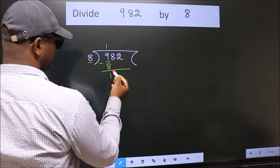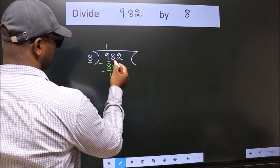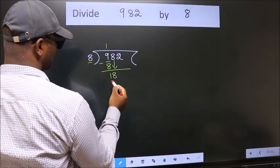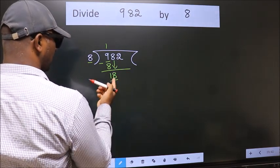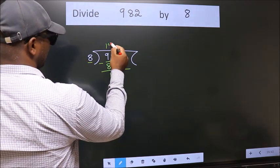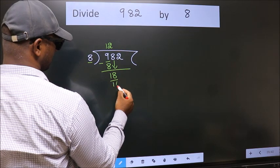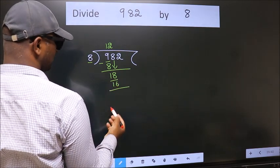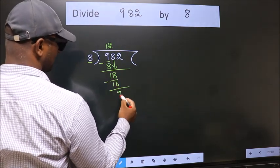After this, bring down the beside number. So 8 down, giving us 18. A number close to 18 in the 8 table is 8 twos, which is 16. Now we subtract and get 2.